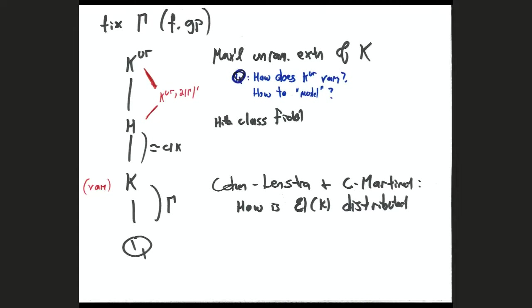What we study in this paper is instead a larger problem that dominates the abelian one: as you vary K over gamma extensions, we ask how the maximal unramified extension of K varies. The maximal unramified extension might be infinite, whereas the maximal abelian unramified extension is finite by class field theory. For certain technical reasons, at least in this first paper, we work with the part coprime to twice the order of gamma.